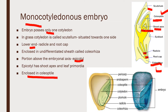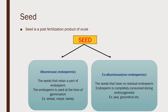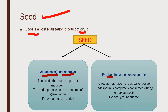A typical maize seed is an example for monocot. Seed is a post-fertilization product of ovule. After fertilization, the ovule develops into a seed. Seed is of two types: albuminous seed, also known as endospermic seed, and exalbuminous or non-endospermic seed.